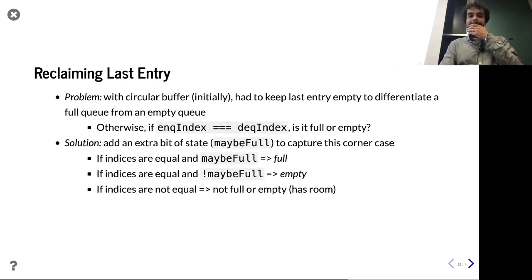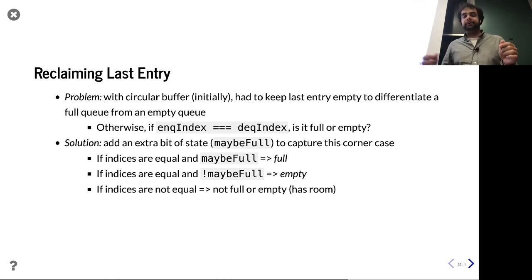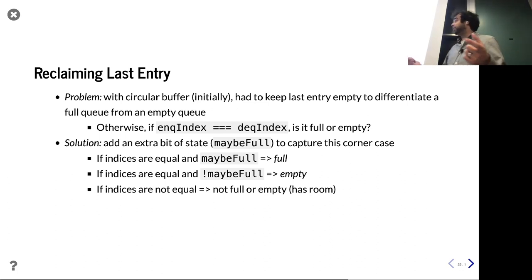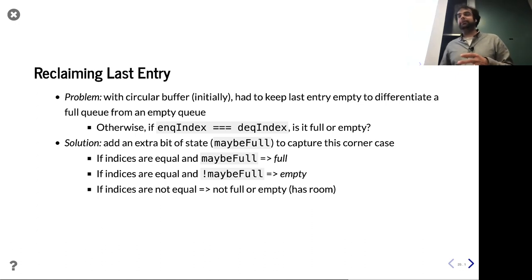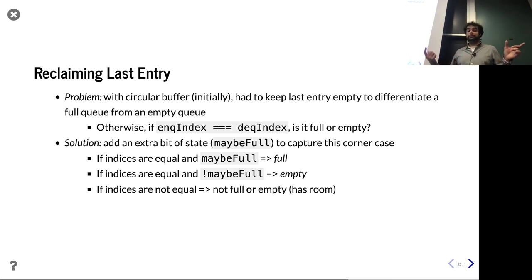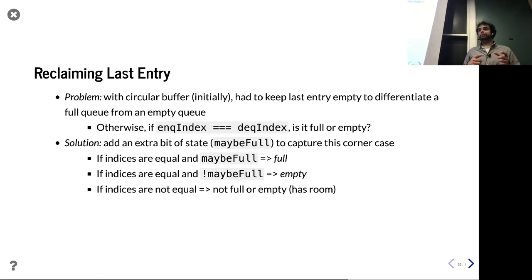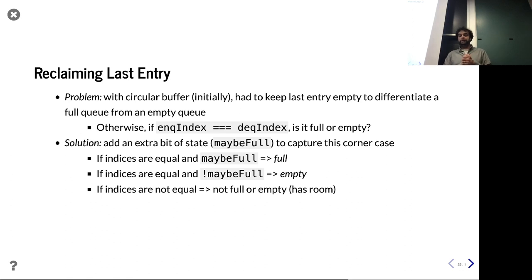Let's reclaim that last entry. The problem was we couldn't tell the difference between empty and full in the circular buffer. The issue: if both indices are the same, am I empty or am I full? How to tell the two apart? The answer: use a one-bit register to track that difference. We have this one-bit register called 'maybe full.' If indices are equal and maybe-full is true, we know we're full. If indices are equal and maybe-full is false, we know we're empty. If indices are not equal, we're neither empty nor full and don't consult this register.